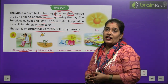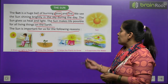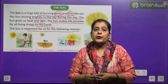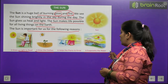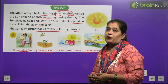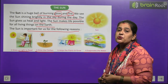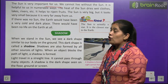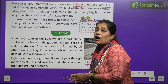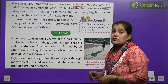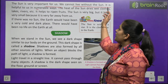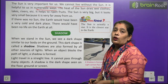It dries the cloth — kapdon ko sukhane ke liye hume suraj ki avashyakta hai. It helps the plants to grow — suraj paudhon ko ugne mein madad karta hai. It evaporates the water — pani ko evaporate karta hai. The sun is very important for us. We cannot live without the sun. Suraj hamare liye bahut zaruri hai; hum suraj ke bina jeevit nahi reh sakte.